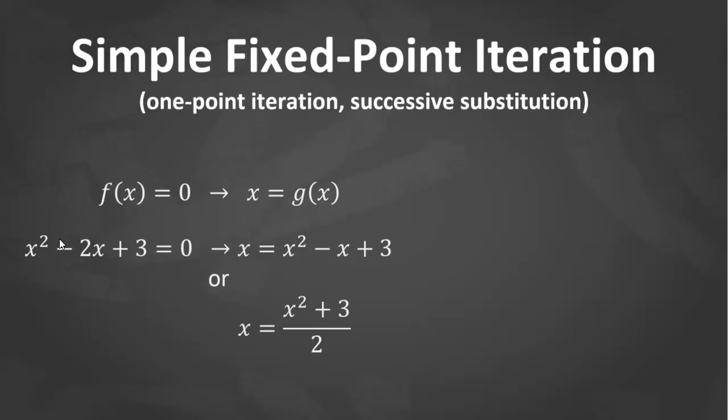Or we can also manipulate this f(x) such that we have x = (x² + 3)/2. So we transferred x² and 3, then negative 2x transferred to the right side, then over 2. So we have x = (x² + 3)/2. However, what's easier to implement on a computer is to just add x at both sides.